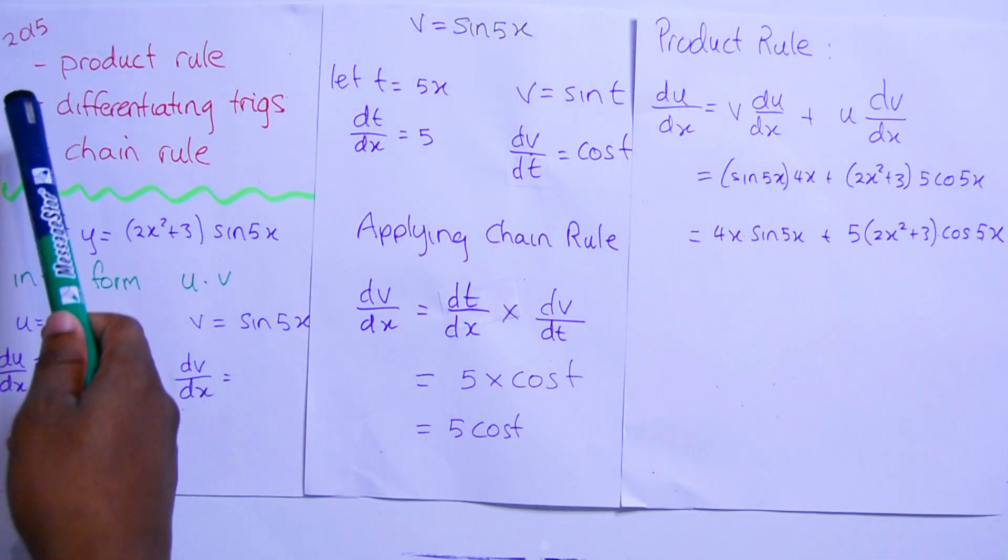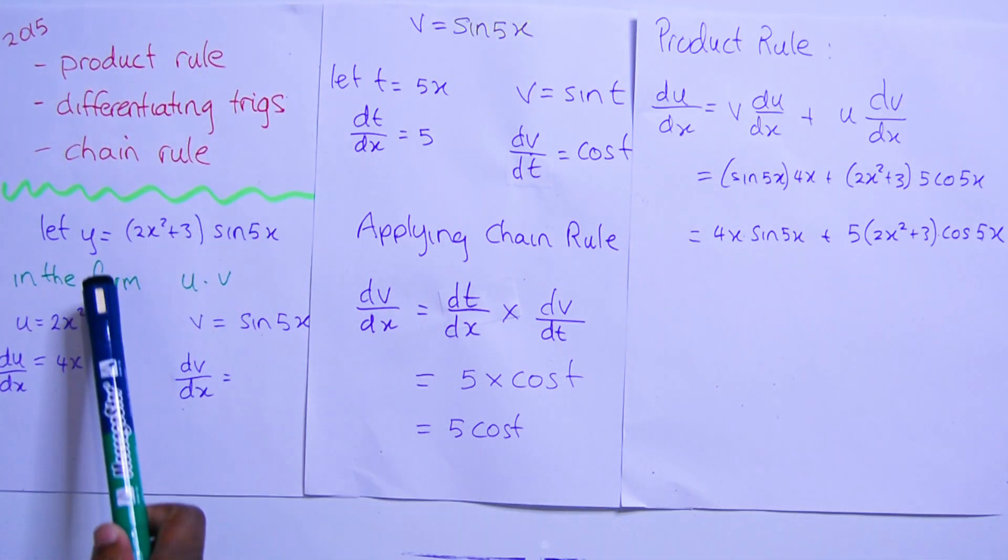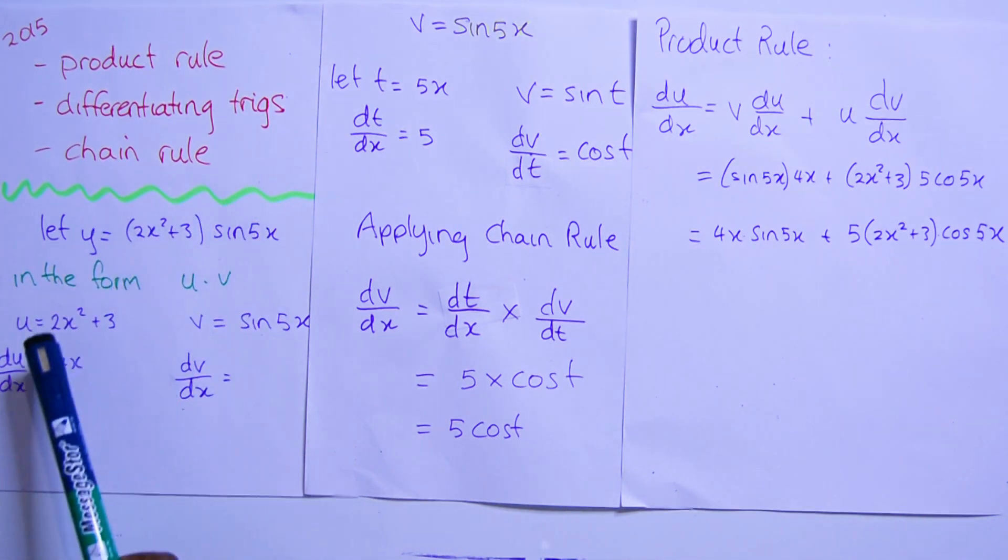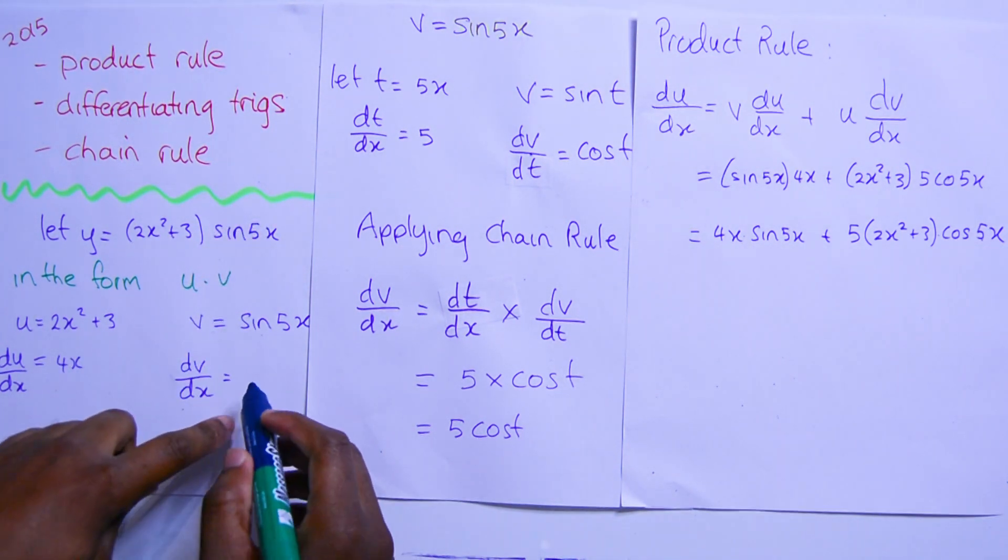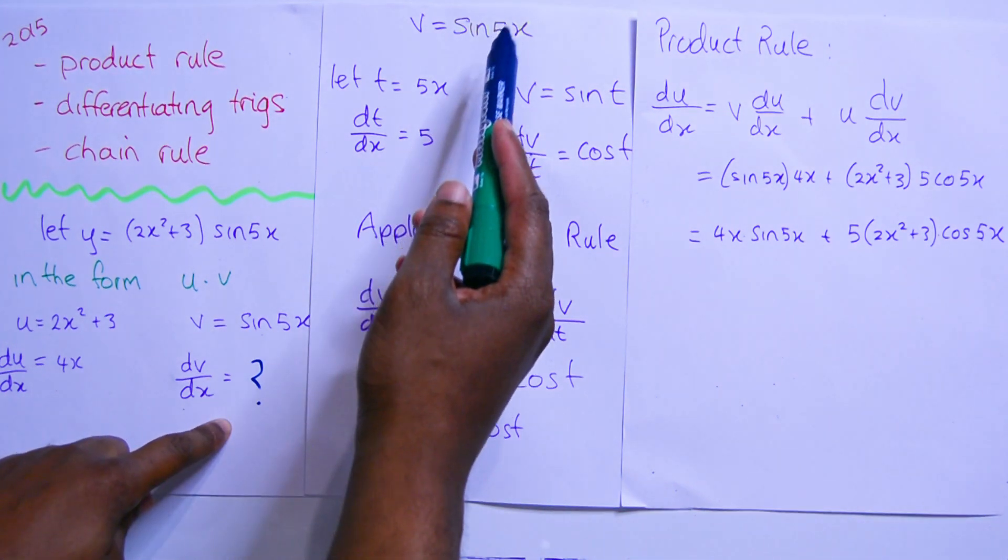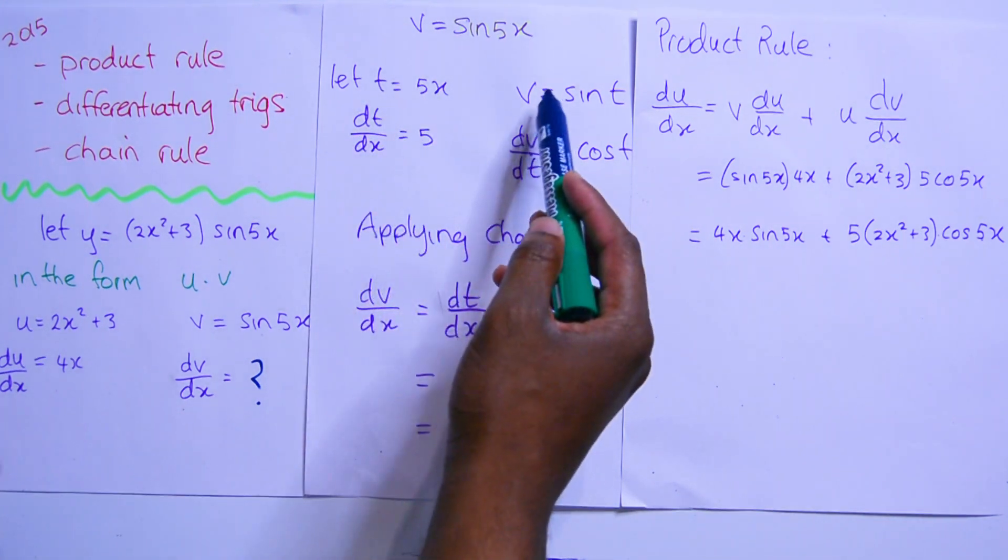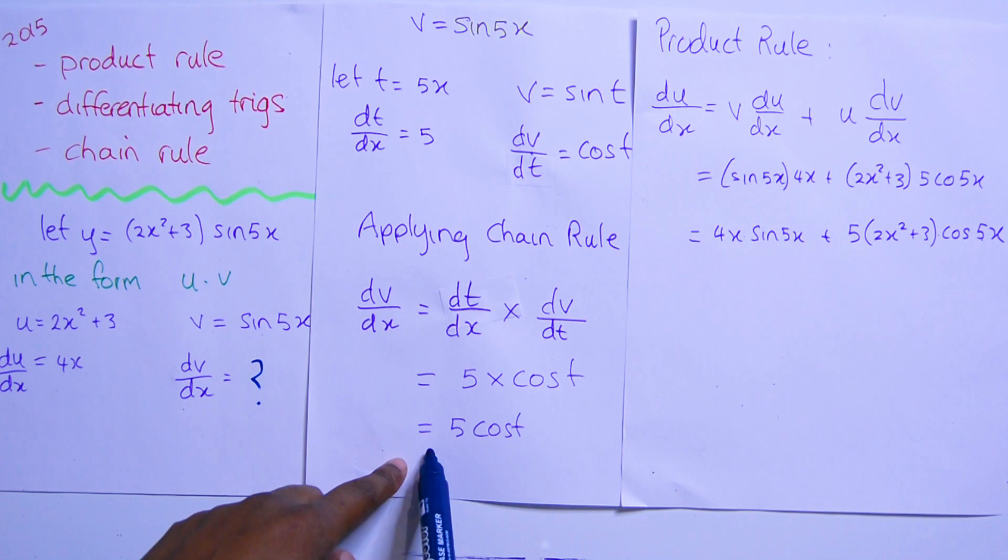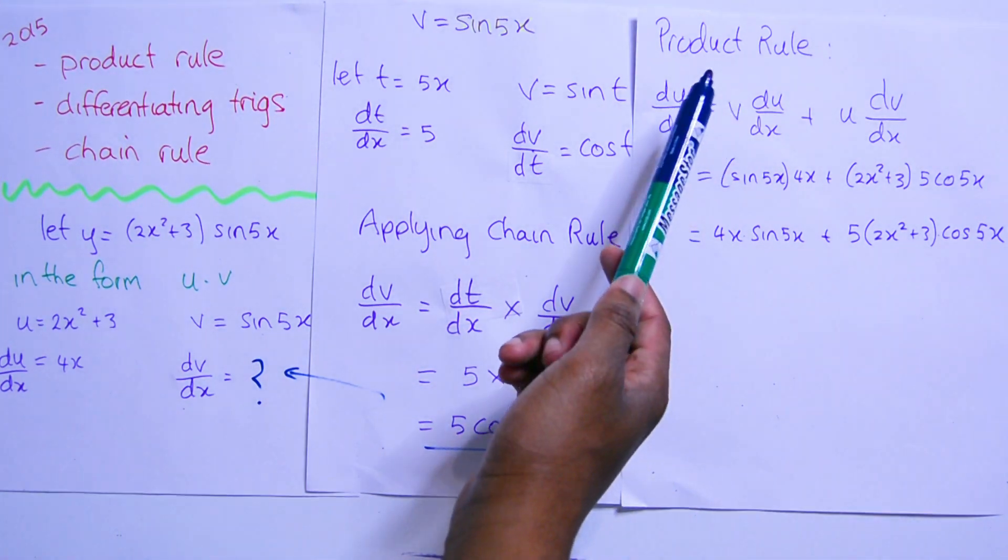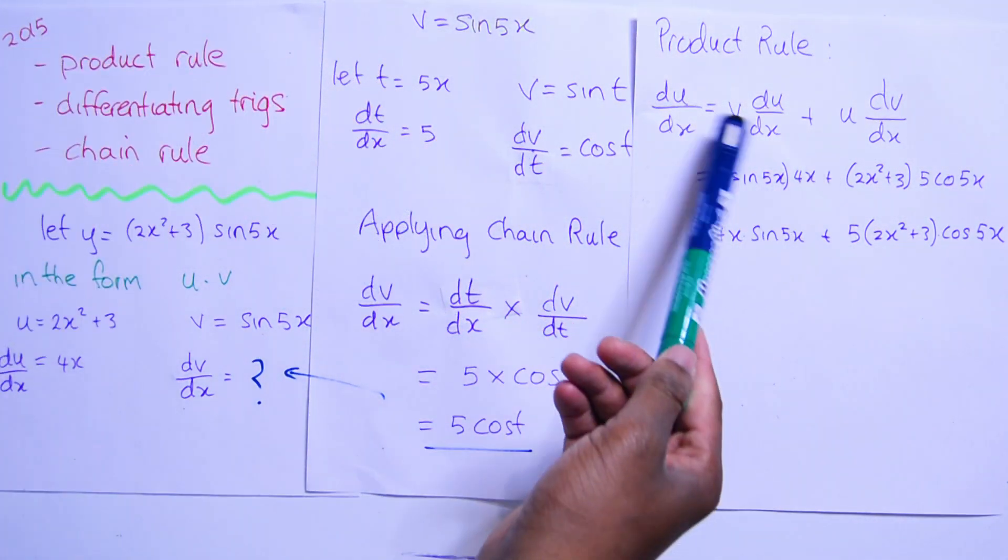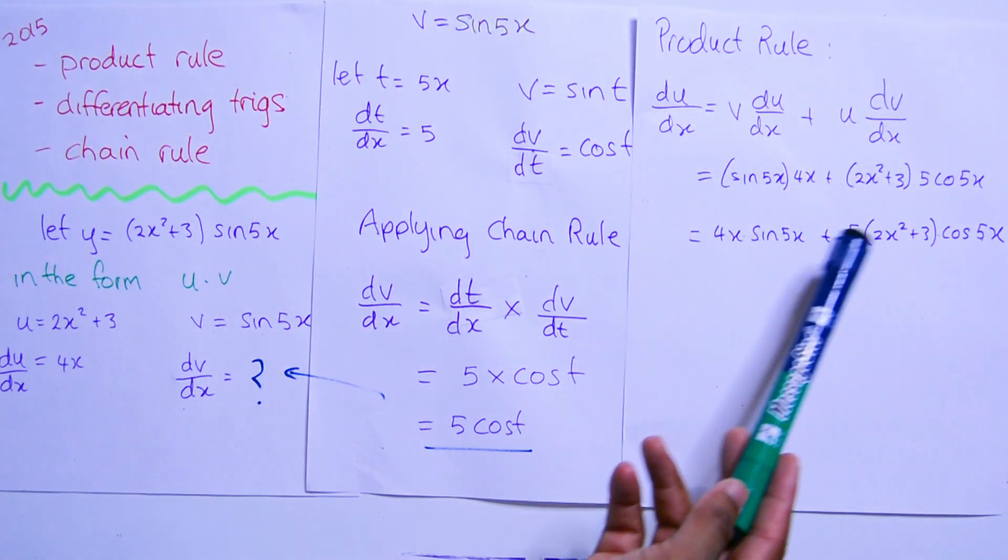Now going through 2015, the product rule, differentiating trig, and chain rule - all of these were tested. We had to let y be equal to the function. So we set up the product: u·v. To get dv/dx, we'll use v = sin(5x) and use a little chain rule sequence where t = 5x. After we have dv/dx and du/dx, you simply apply the product rule, substitute your values, and try neatening it up to get your answer.